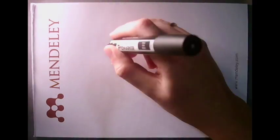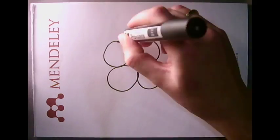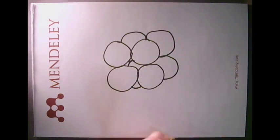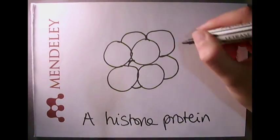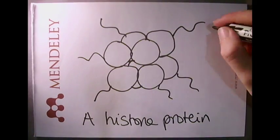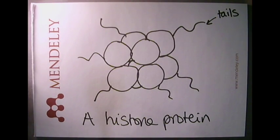Histone proteins are found in groups of eight, and the flexible tail end of each protein extends out of this tight bundle. These tails can be methylated.